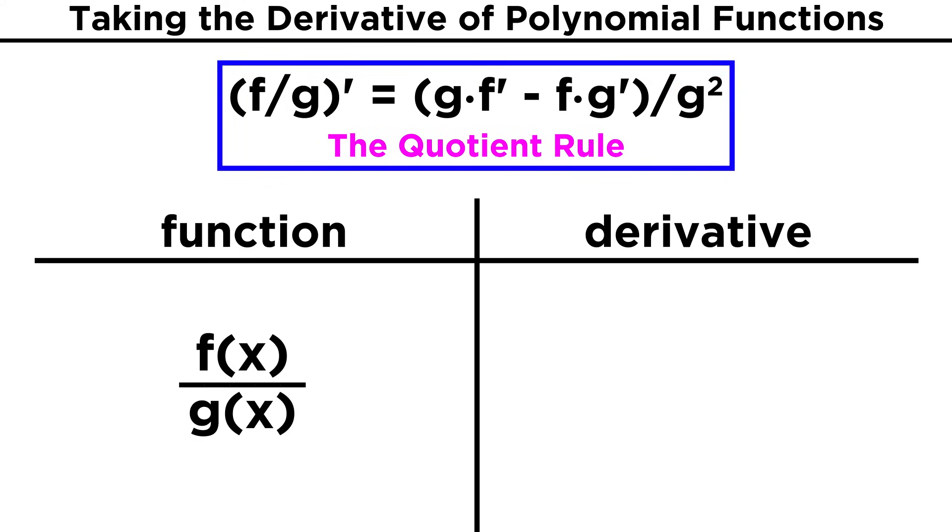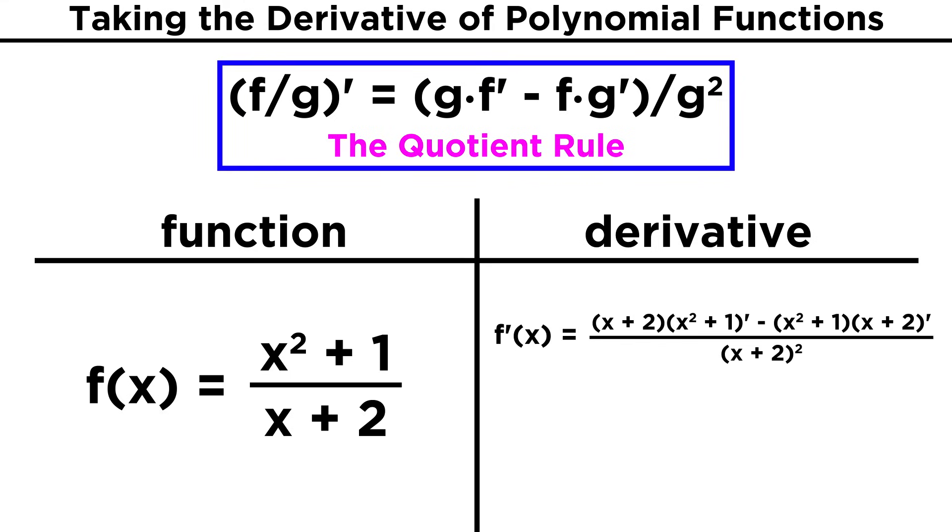Don't worry, you will memorize this quite easily. Let's try an example. What about the derivative of x squared plus one over x plus two? First let's set up the expression, making sure to put everything in the correct place. Then let's evaluate these two derivatives. For the first, we get two x, and for the other, we get one. Now we can multiply these terms, distribute this negative sign, and simplify, and expand the denominator if we wish to get x squared plus four x minus one over x squared plus four x plus four, which can be left as is.